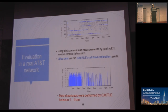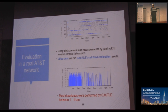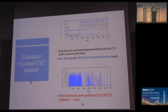We also evaluated CASEL on real networks — AT&T and Verizon. The results shown are from AT&T. During low-load periods such as 3am to 9am, CASEL schedules the download process, achieving much higher throughput and more efficiently utilizing the channel spectrum.